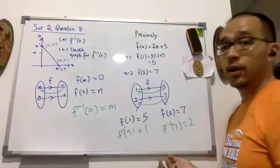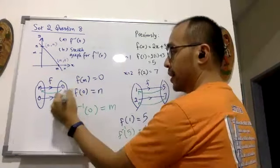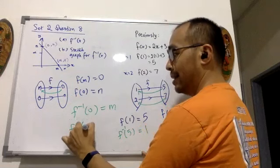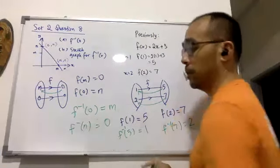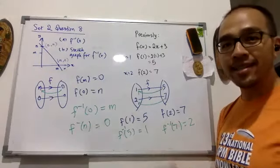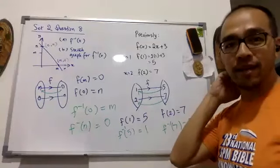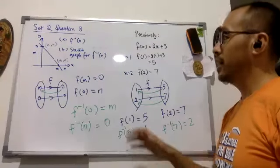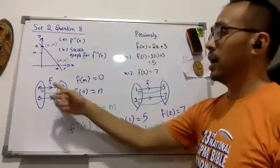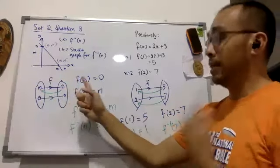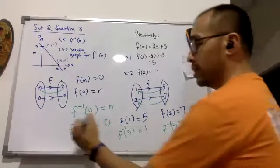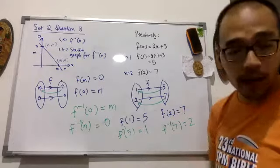And that's our answer. Therefore, the first one: the inverse of 0 is m. The second: the inverse of m will be 0. I was trying to figure out how to explain this to you, and I thought that by using mapping it would be easier — because f(m) is 0, therefore f-inverse of 0 going back the other way will be m, and f-inverse of m will be 0.